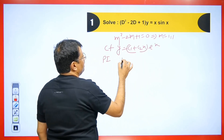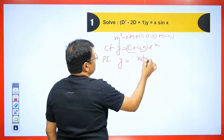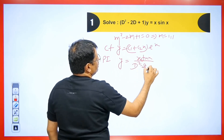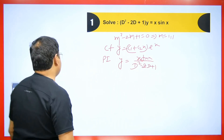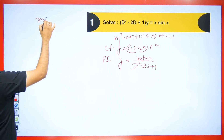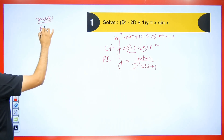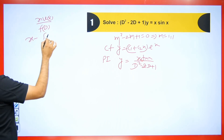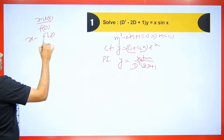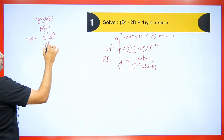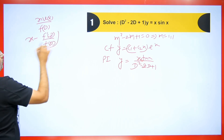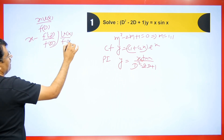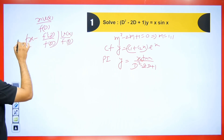Now we will find the PI. PI = x·sin(x) divided by (D²−2D+1). We know that if we have x·v(x)/f(D), then we apply the formula: PI = [x − f'(D)/f(D)] · v(x)/f(D). We will apply this formula here. So we are getting: x minus f'(D)/f(D), and we find its derivative. This will be (2D−2) divided by (D²−2D+1).